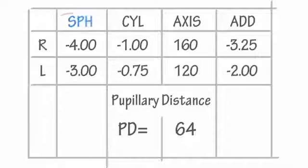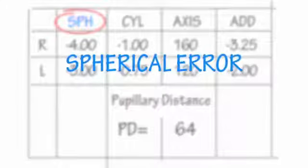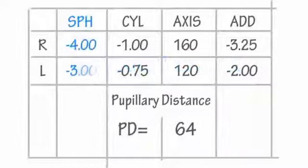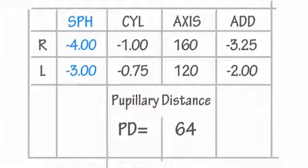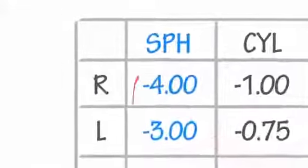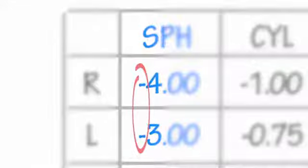Next we have SPH, which means spherical error. But don't be put off by the word error — all this simply means is how strong the lens needs to be to correct your vision. Below SPH, you'll see a plus sign or a negative sign followed by a number. The plus sign means you're farsighted and the negative sign means you're nearsighted.